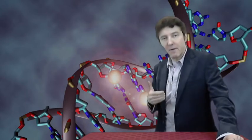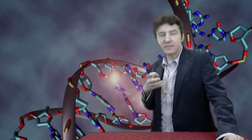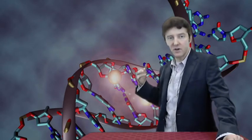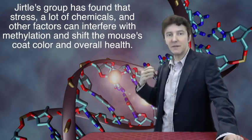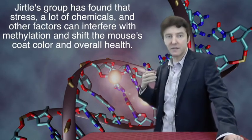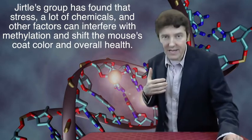They're looking for conditions that tip the balance from methylation, thus between genes that are off and those that are on. They found that a lot of chemicals, stress, and other factors that interfere with methylation shift the coat color and health of the mice, and sometimes in very unexpected ways.